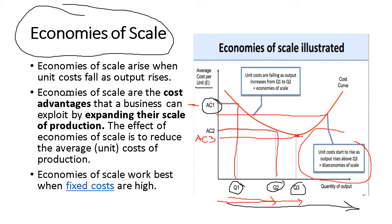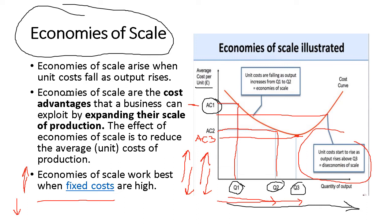Economies of scale work best when your fixed costs are high. Total expenses consist of variable expenses and fixed costs. Variable cost increases when production volume increases, and decreases when production volume decreases. Fixed cost, on the other hand, is constant regardless of output — whether production volume goes up or down, it remains fixed.